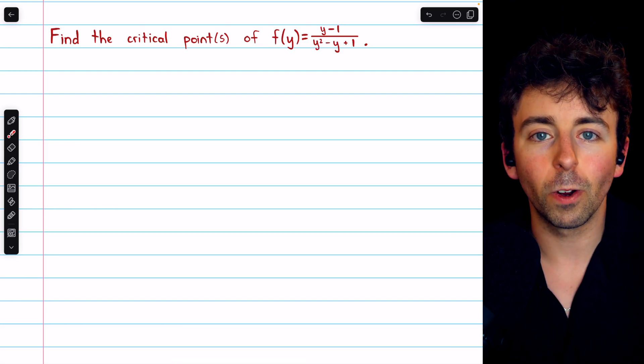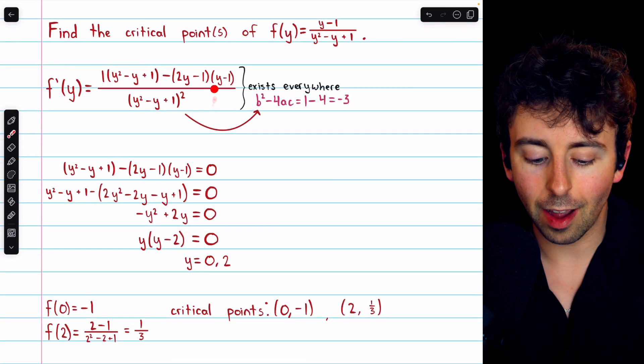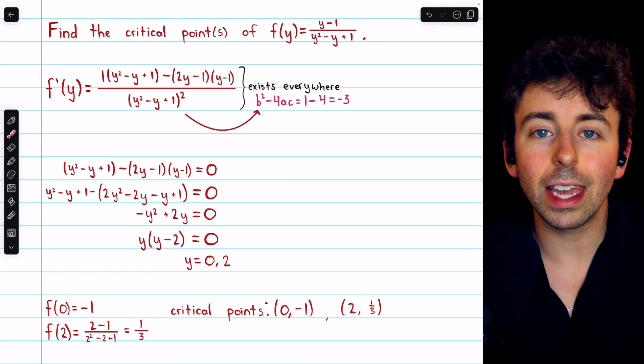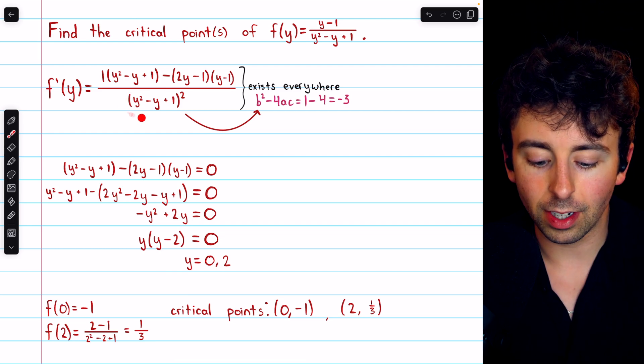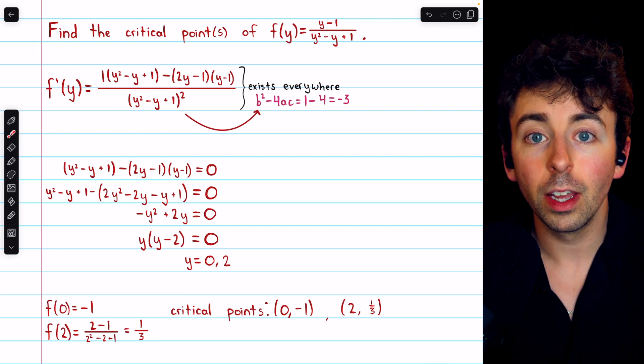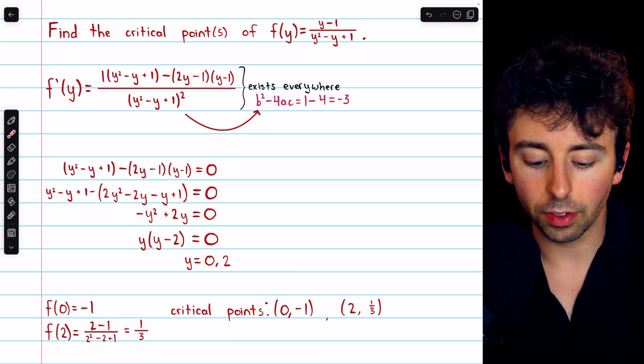I'll put the solution on screen now. Here's the derivative, f'(y). We might begin by trying to find where the derivative doesn't exist. So we might ask, where is the denominator equal to 0? Well, for the denominator to equal 0, y² - y + 1 would have to equal 0.